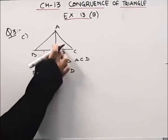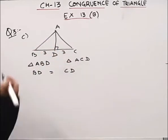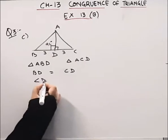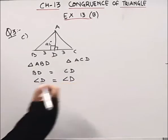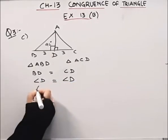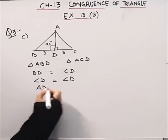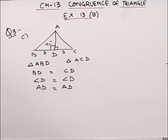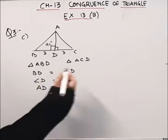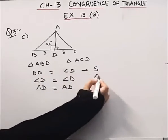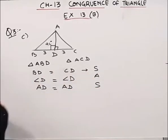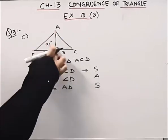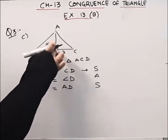If this angle is 90 degrees, then obviously this angle is also 90 degrees. So angle D is equal to angle D. Then we have AD is equal to AD — this is the common side. That means triangle ABD is congruent to triangle ACD.